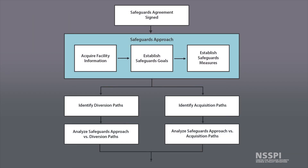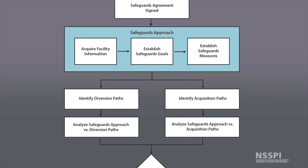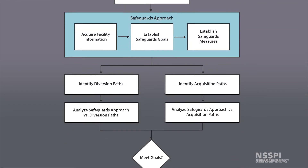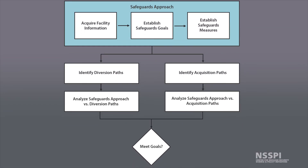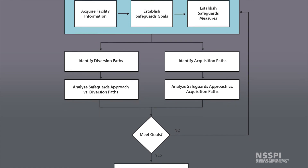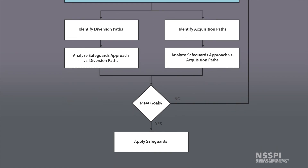Once both the diversion path analysis and acquisition path analysis have been completed, the safeguards approach can consider whether the established safeguards goals are being met by the safeguards measures to be employed. If they are not, the process needs to be restarted and all analysis reconsidered with a different set of safeguards measures. However, if the goals are met, then the safeguards approach is complete and safeguards can be applied at the given facility.